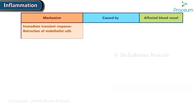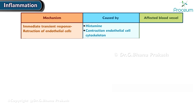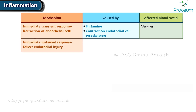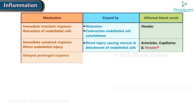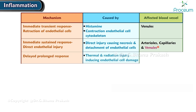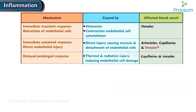The immediate transient response, due to retraction of endothelial cells, is caused by histamine and contraction of the endothelial cell cytoskeleton, and affects the venules. The immediate sustained response, due to direct endothelial injury, is caused by direct injury causing necrosis and detachment of endothelial cells, affecting arterioles, capillaries, and venules. A delayed prolonged response occurs due to thermal and radiation injury, inducing endothelial cell damage and affecting the capillaries and venules.